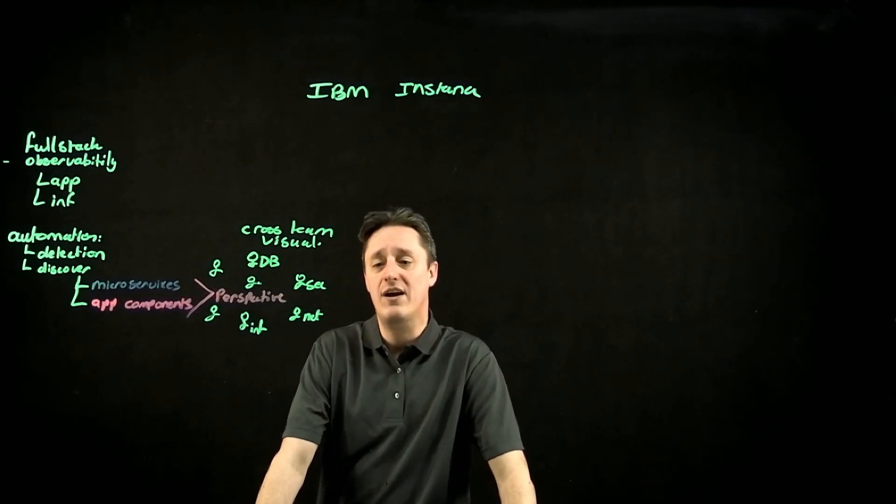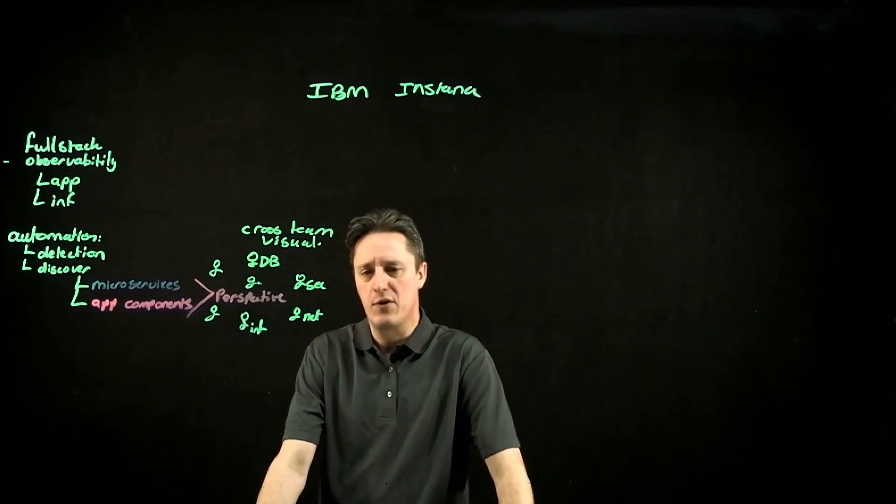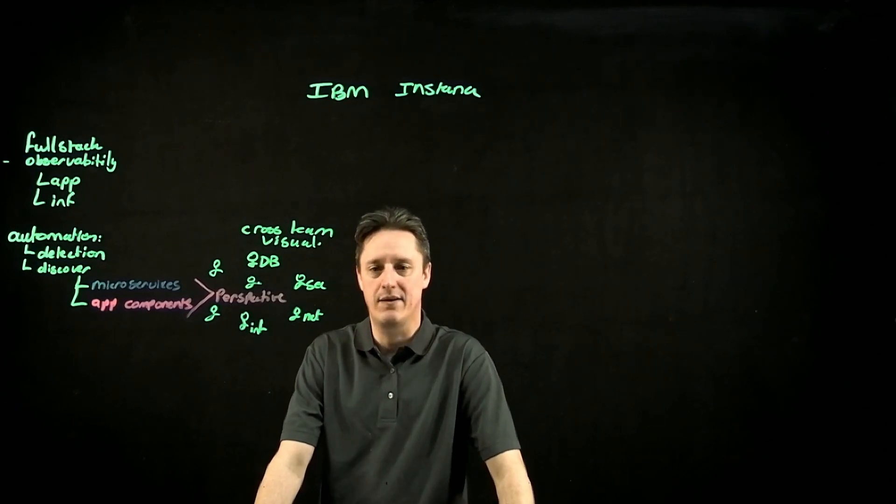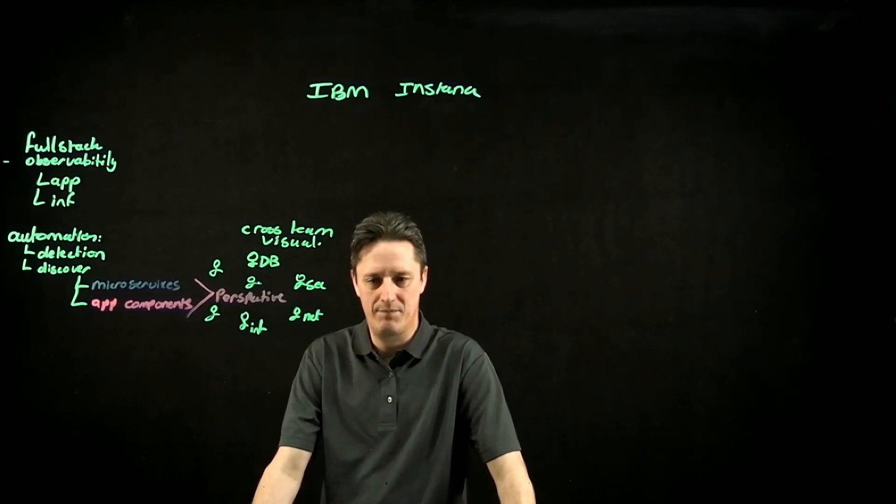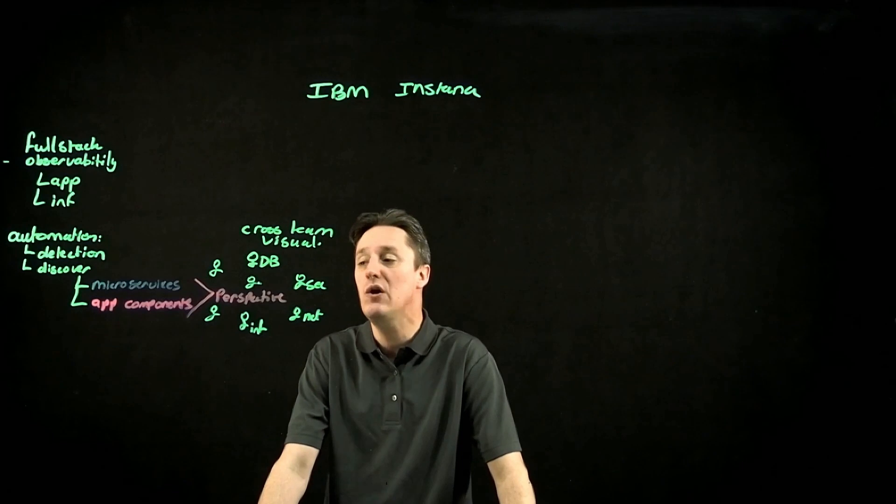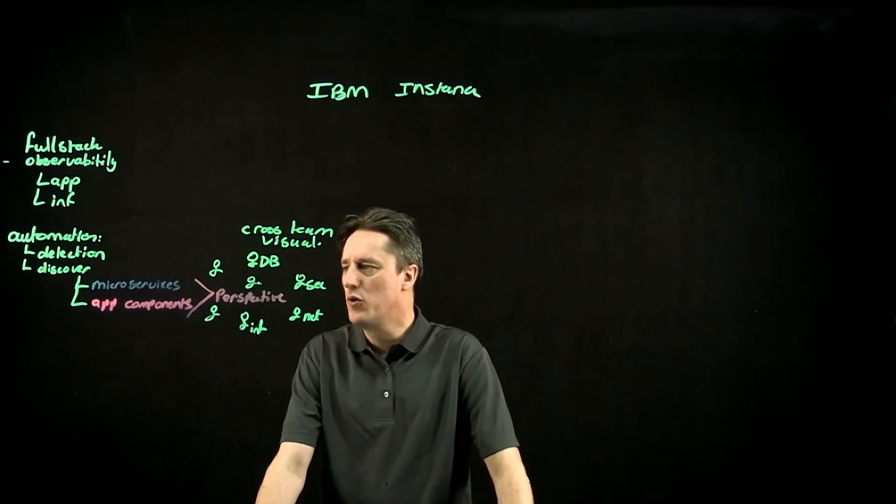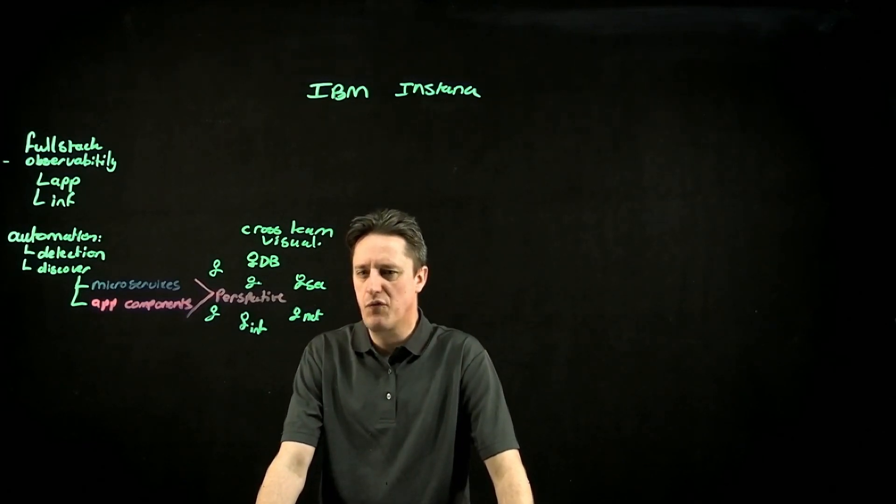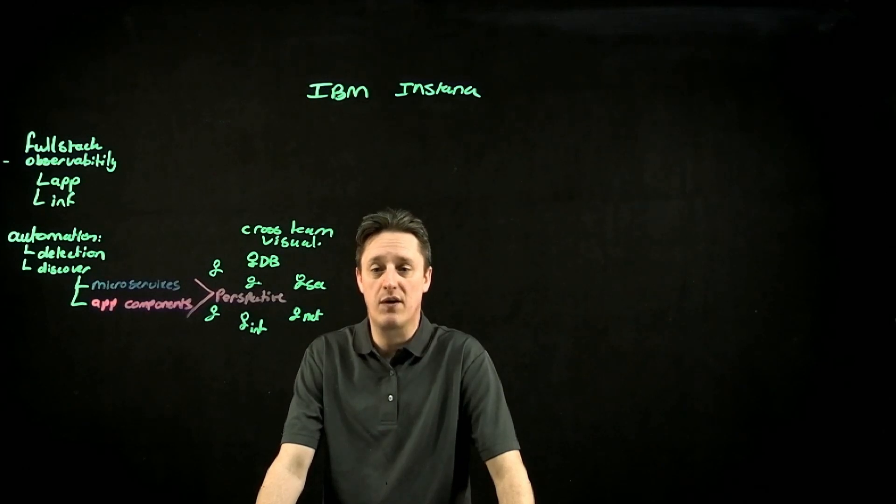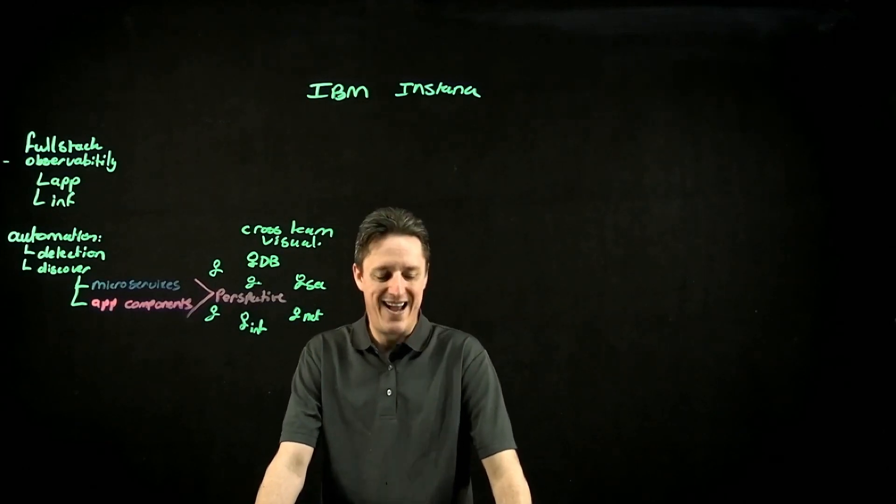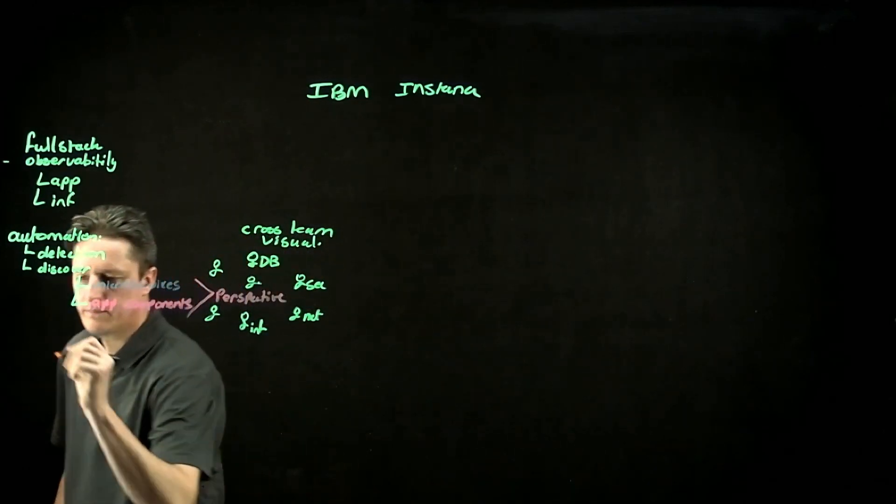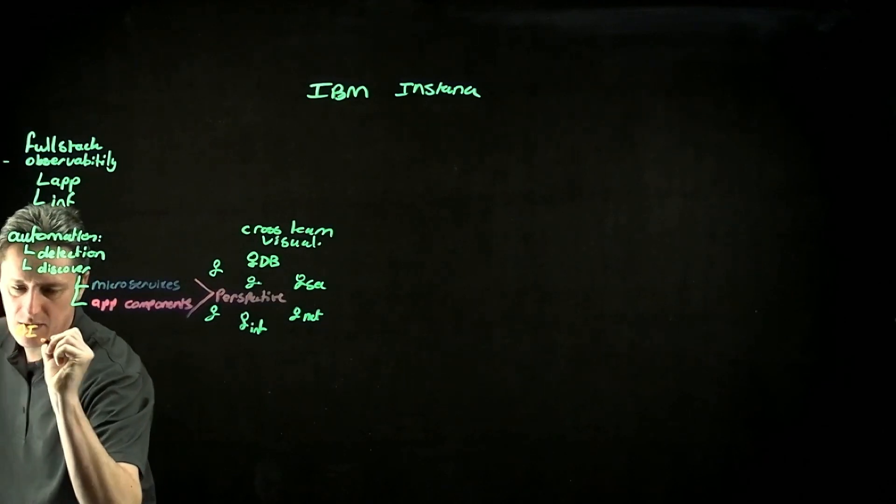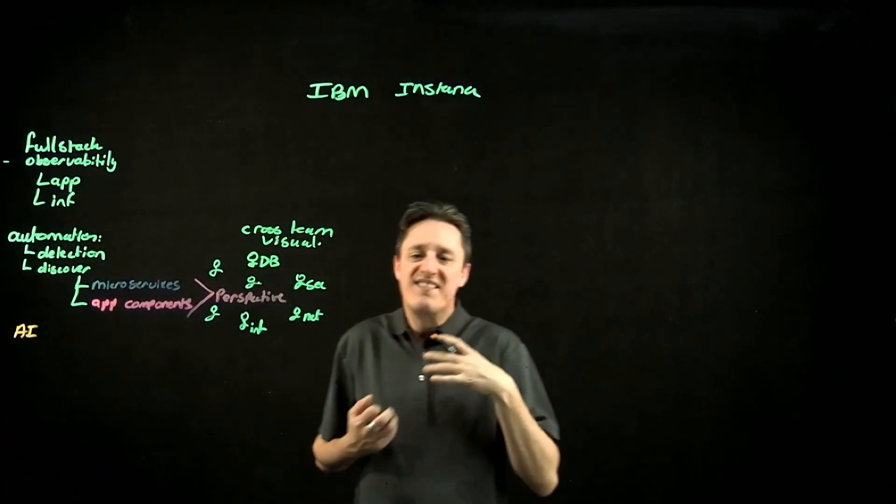What Instana does is actually takes all of this and combines it with an AI backend. So what we have is artificial intelligence, machine learning, looking at all of these interactions from a flow perspective, historic data, and allows the AI to do predictive elements.